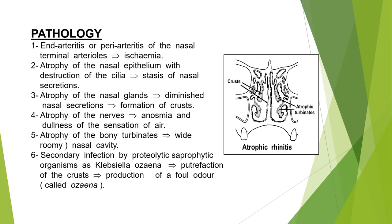The pathology of atrophic rhinitis: it starts with endarteritis or periarteritis of the nasal terminal arteries causing ischemia. After ischemia, atrophy of the nasal epithelium occurs with destruction of the cilia and stasis of nasal secretions. Atrophy of nasal glands causes diminished nasal secretions and formation of crusts — changing from mucoid discharge to crusts. Atrophy of the nerves causes anosmia and dullness of sensation of air. Atrophy of bony turbinates leads to a wide, roomy nasal cavity.